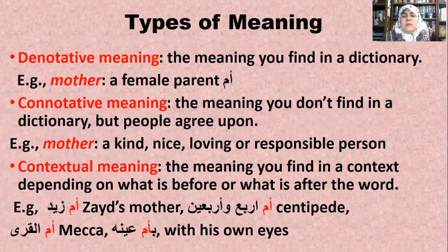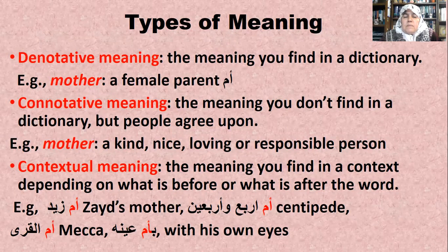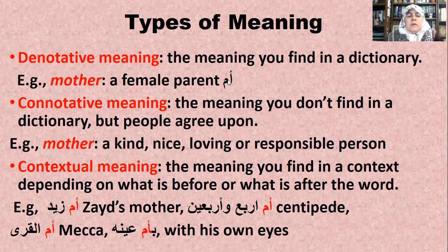The denotative meaning is the meaning you find in a dictionary. For example, if you look for the meaning of the word 'mother,' you will find 'a female parent' or 'om' in Arabic.